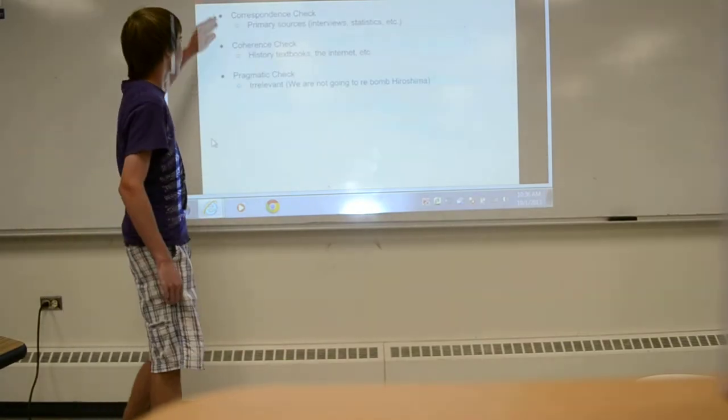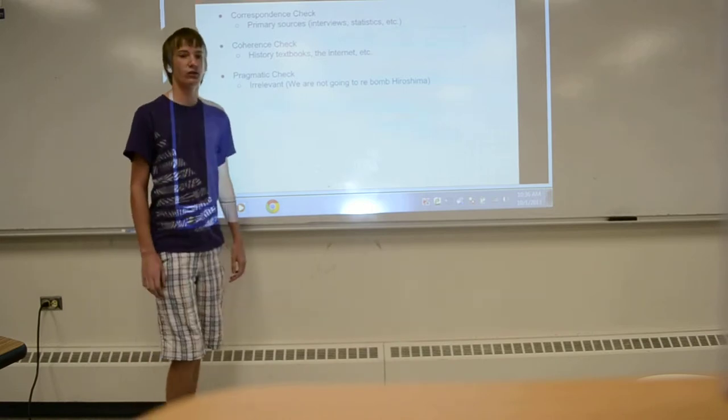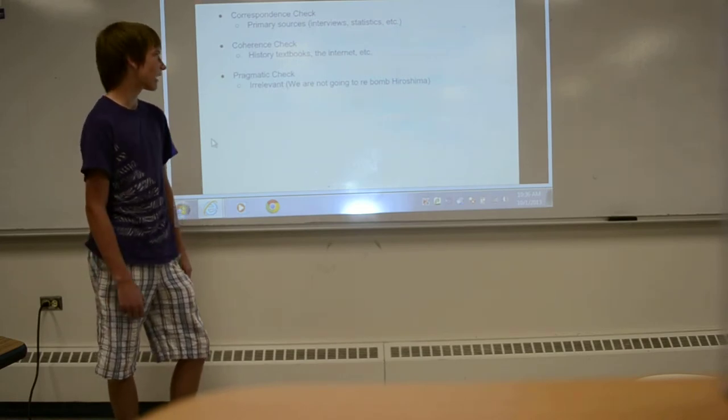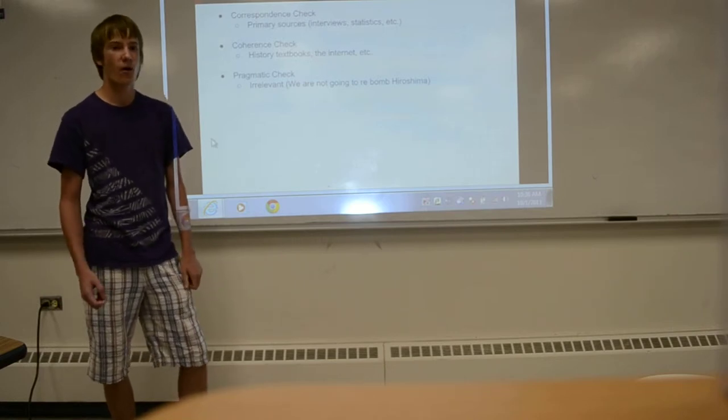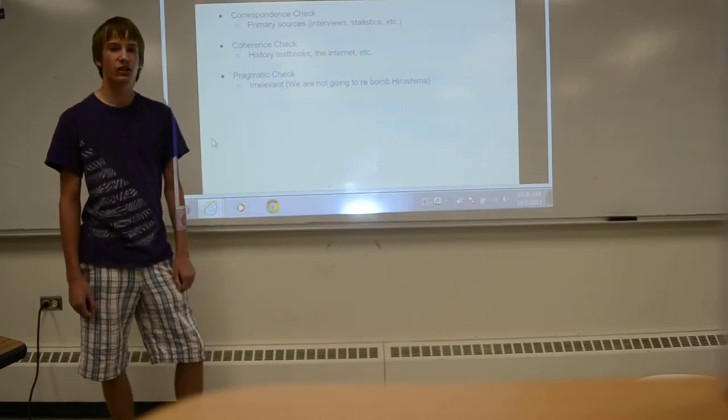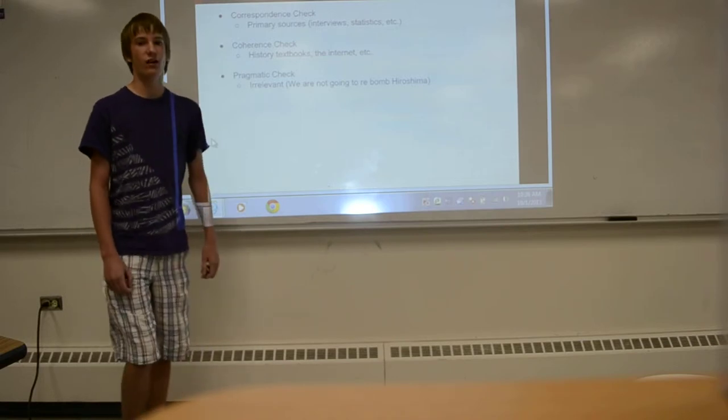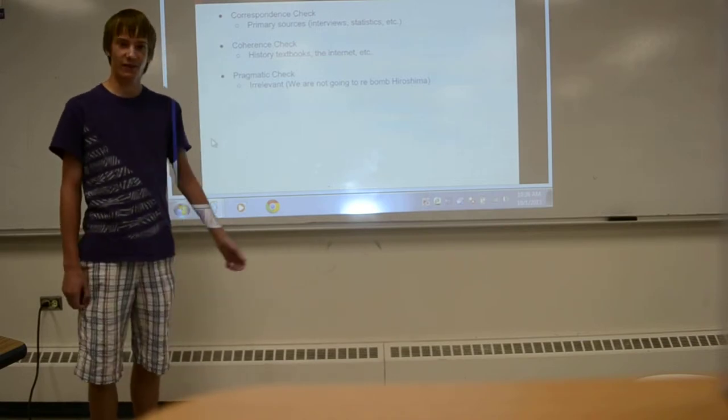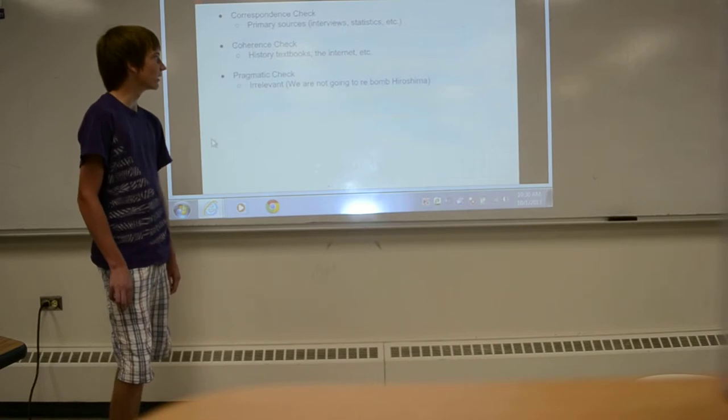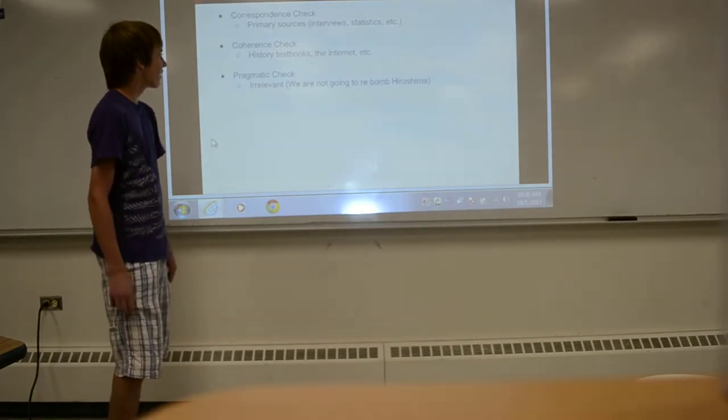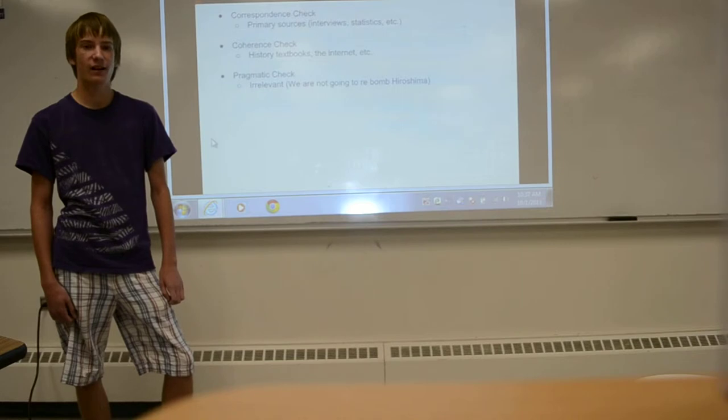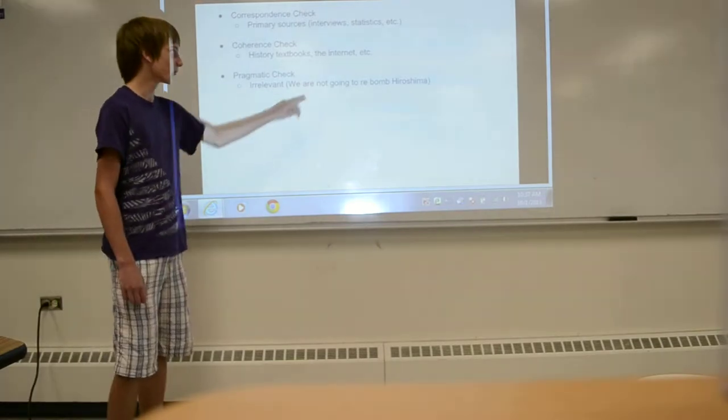We have our three truth checks. The correspondence check, we have primary sources. We have the video. There are interviews, statistics that show the deaths. It's some experiences that happened for people that were actually there during while the bomb went off. We can also coherently check with our knowledge to other people's because we have history textbooks that talk about the bombing. The internet, obviously, we can go around again and check lots of things to see that our knowledge is consistent with other people's. And we cannot pragmatically check it. It is not relevant to what we could do because you can't pragmatically check history. We're not going to re-bomb Hiroshima.